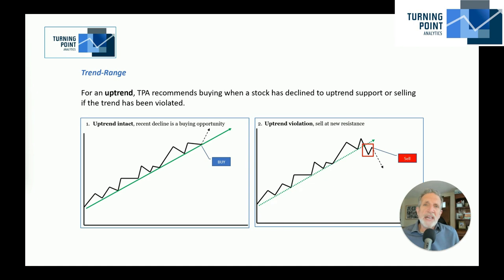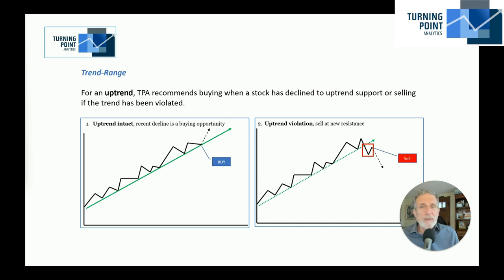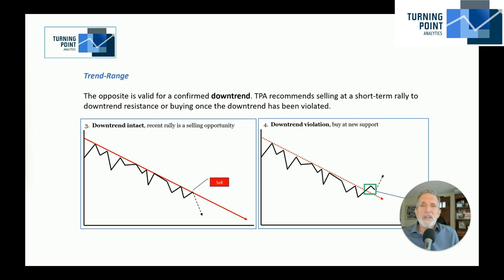The other condition is that it has broken uptrend support, and therefore we'd be looking at a place to sell — either sell the position or perhaps establish a short position. The other condition in a stock that has trend strength is that that stock is in a downtrend, which is just the exact opposite of the uptrend.